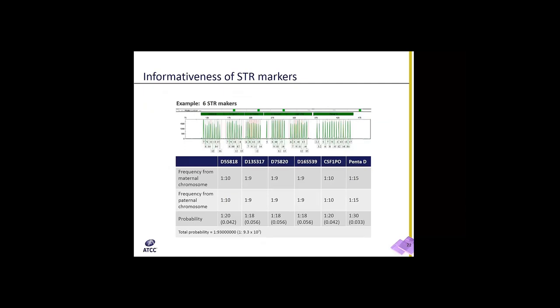Information can be even more robust by adding additional markers. With eight STR markers, if you look at D5S818, the frequency of the allele from the maternal chromosome is 1 in 10, as is the frequency from the paternal chromosome, so the probability of two cell lines having an identical profile using just that one marker is 1 in 20. If you calculate the probability across all six STR loci by multiplying the product of all probabilities, the number is 1 in 9.3 times 10 to the 7th power. The more markers you add, the more resolution you have and the higher the probability of a uniquely identified cell line.